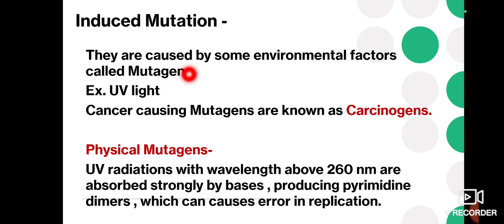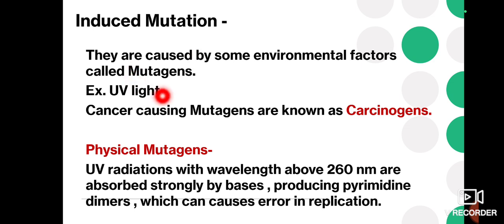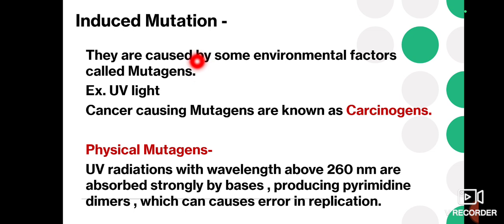The next type is induced mutation. As the name indicates, this kind of mutation is caused by some environmental factors called mutagens — for example, UV rays and gamma rays. This kind of mutation is not natural; it is caused by environmental factors, and these mutations are influenced by environmental mutagens.